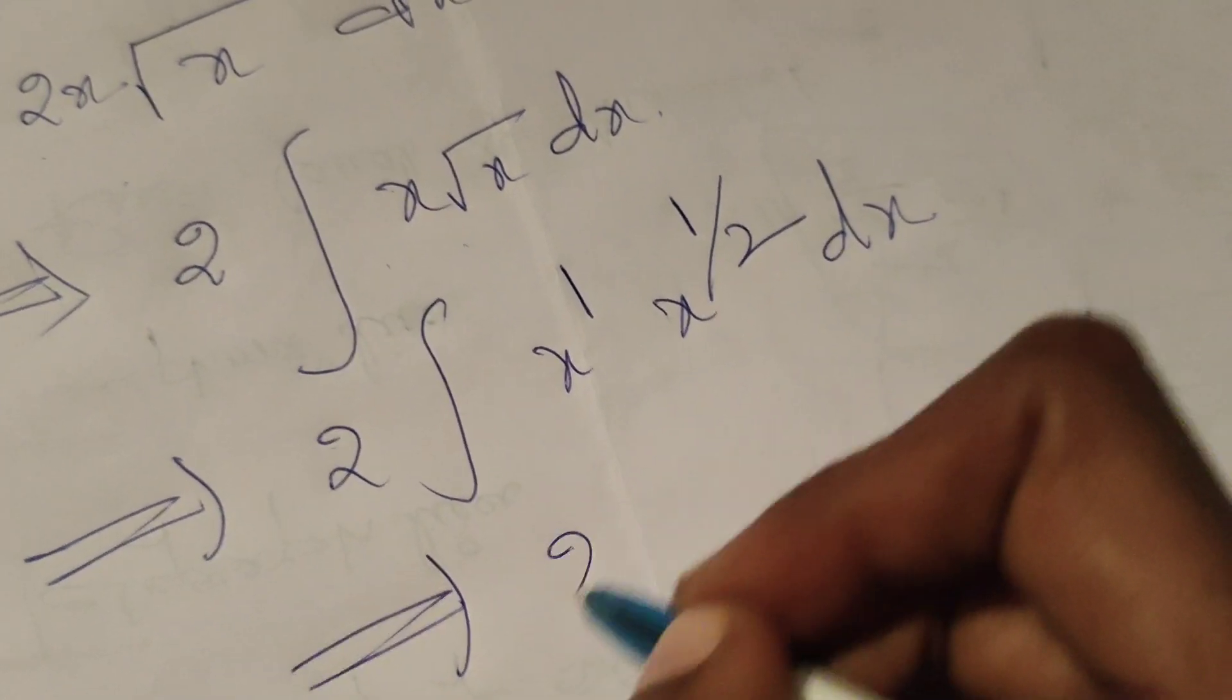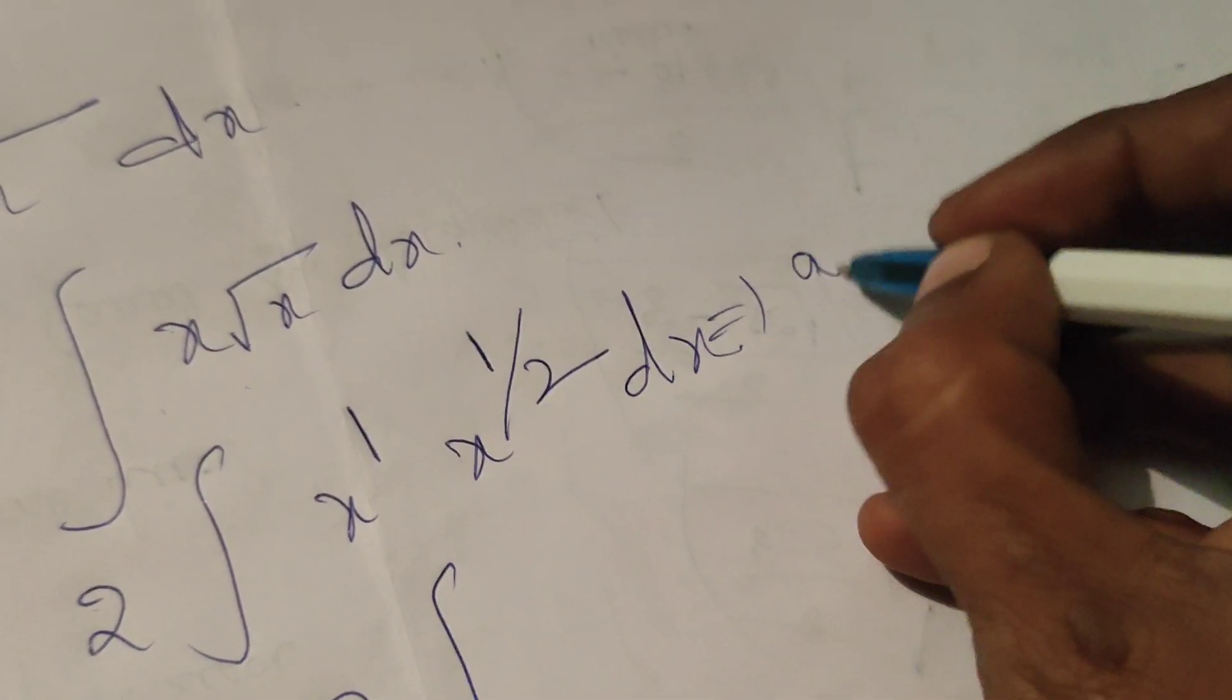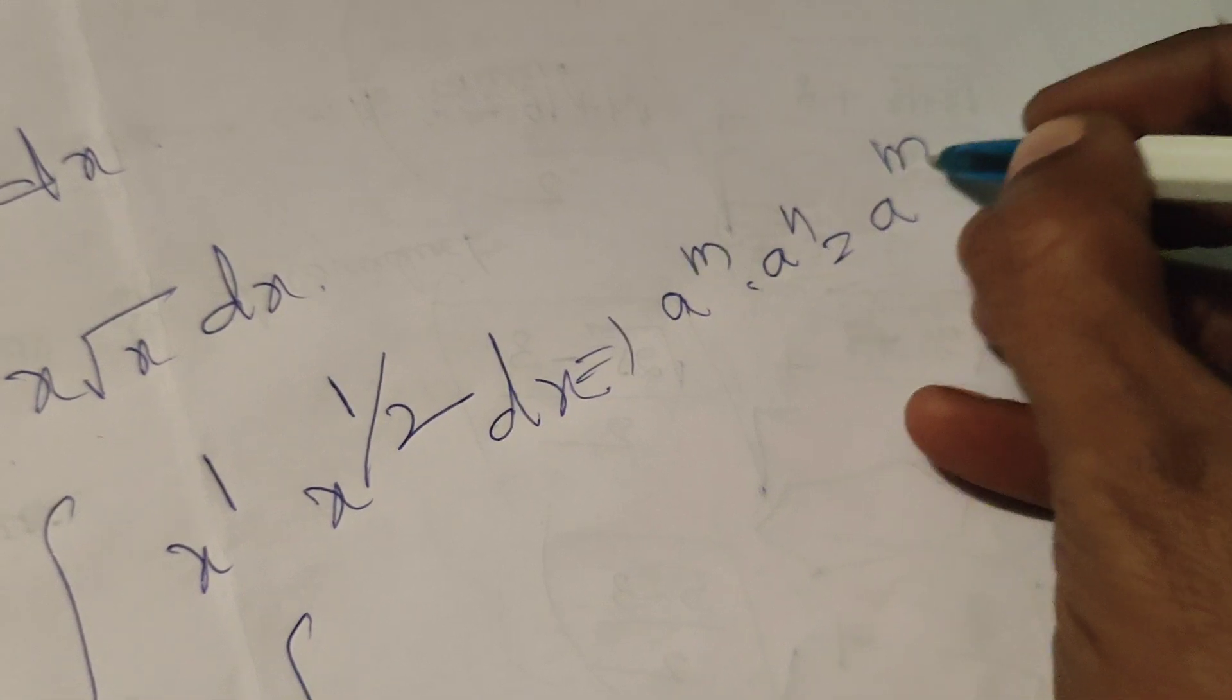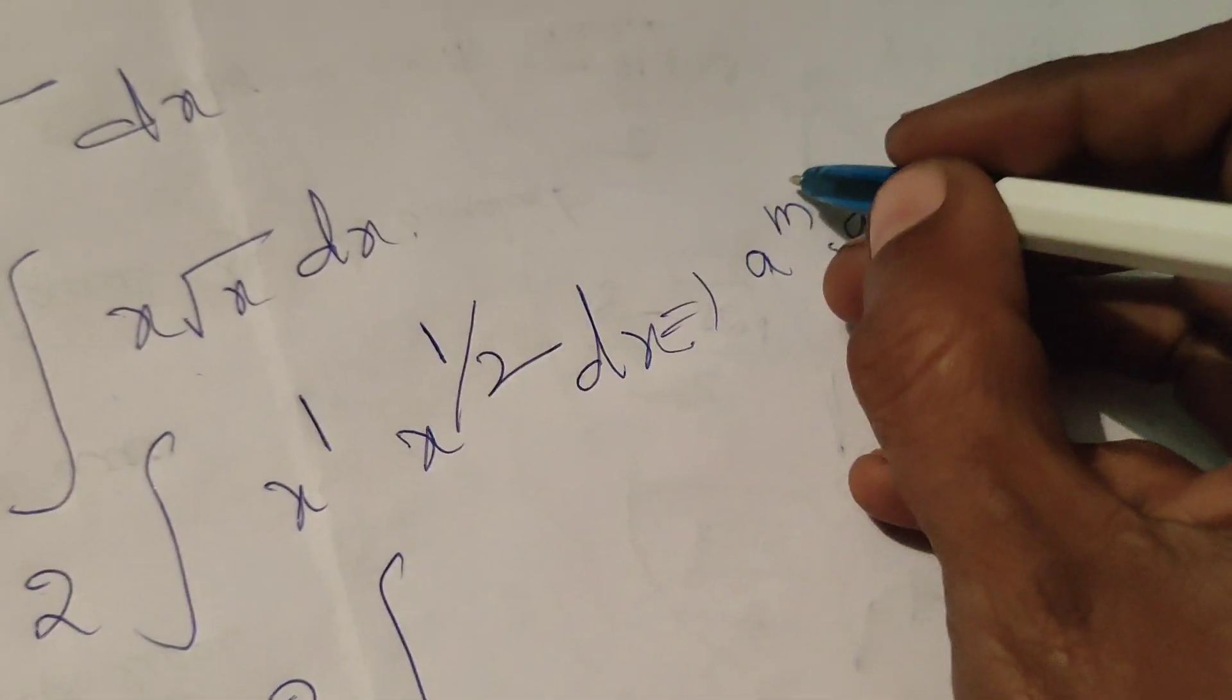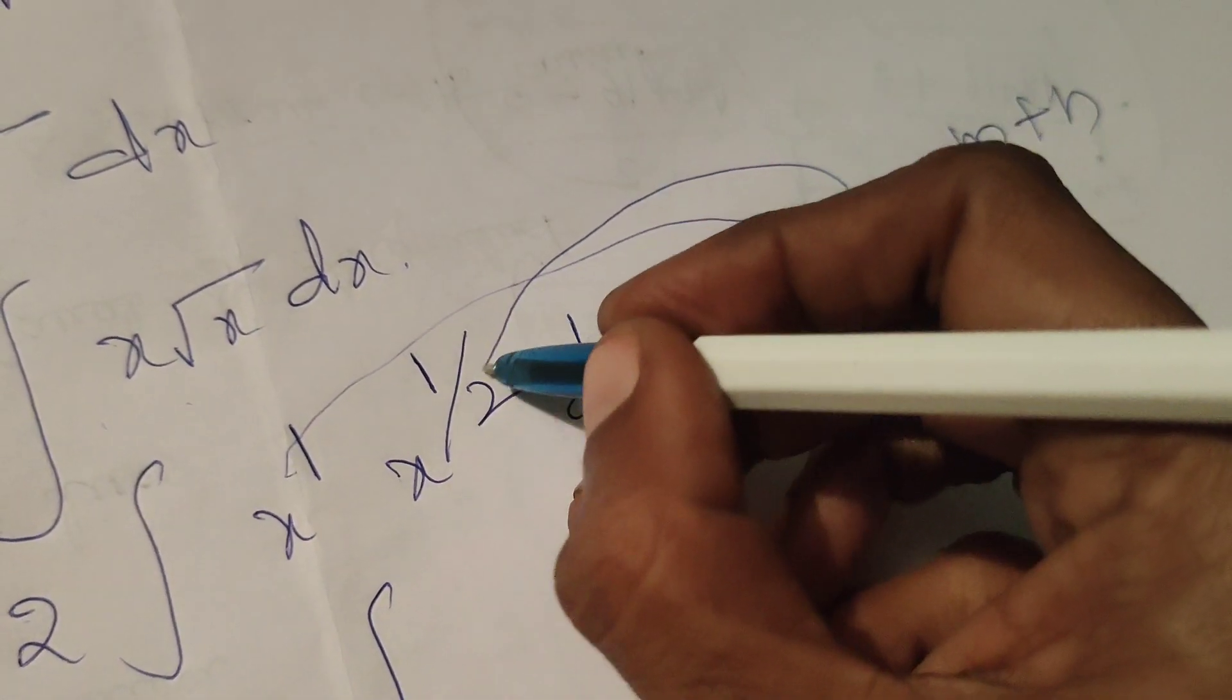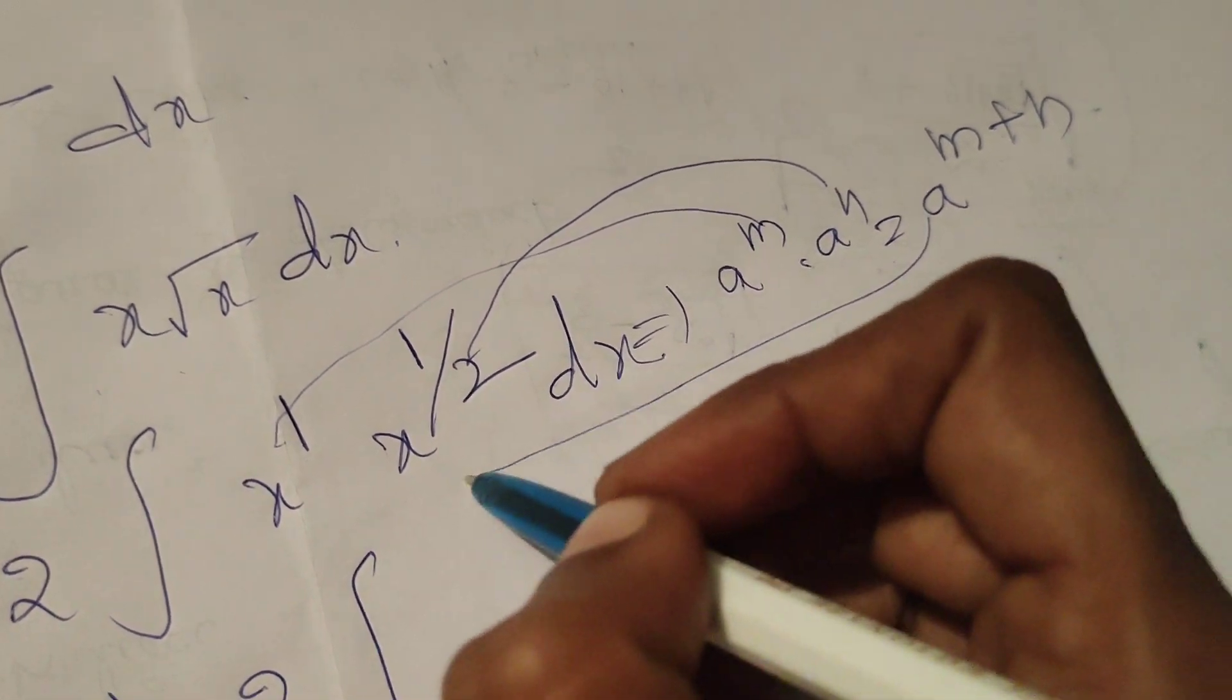Next that 2 into integral of. Here using the formula A power M into A power N equals A power M plus N. Here M means 1 and N means 1 by 2. So A power M plus 1. A means x.